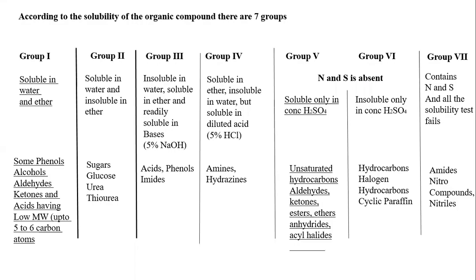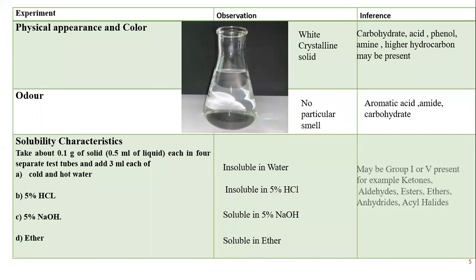We have 7 groups according to the solubility characteristics of any compound. The sample is slightly soluble in water and ether, so it can belong to group 1. It was also found to be soluble in H2SO4, so it can be a group 5 compound also. So the inference is it may be a group 1 or group 5 compound.